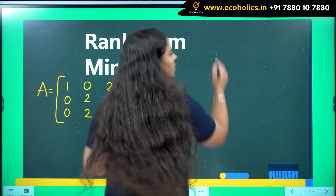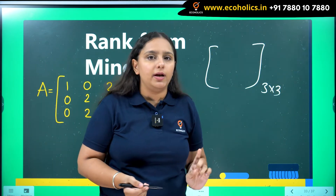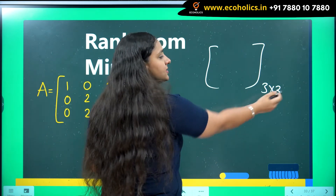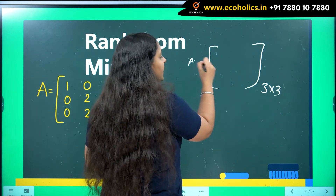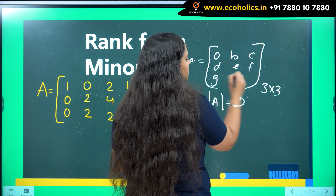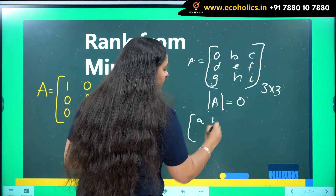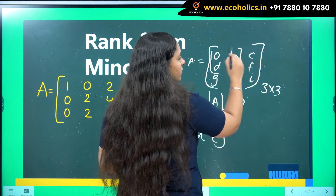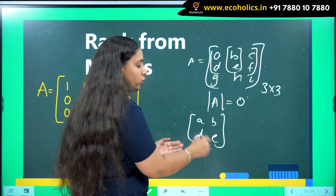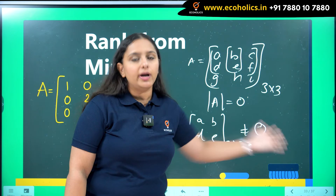For a 3×3 square matrix, the largest minor is the determinant itself — a 3×3 determinant. So if the determinant of matrix A is zero, you go to 2×2 minors. For a matrix with elements a, b, c, d, e, f, g, h, i — if the 3×3 determinant is zero, you take 2×2 submatrices like [a, b; d, e] and compute their determinants. As soon as one 2×2 is not equal to zero, you stop and write rank equal to 2.